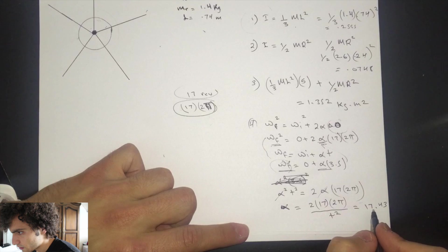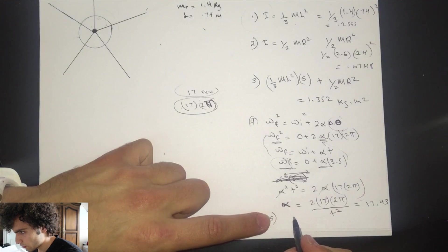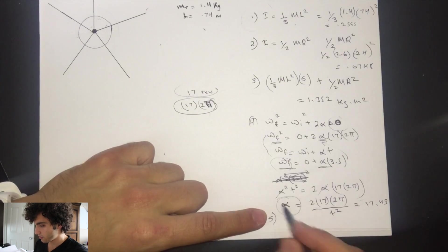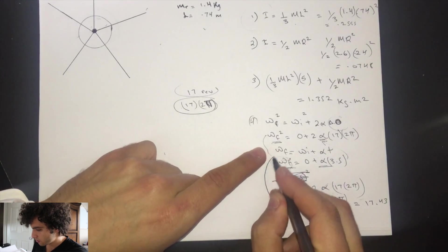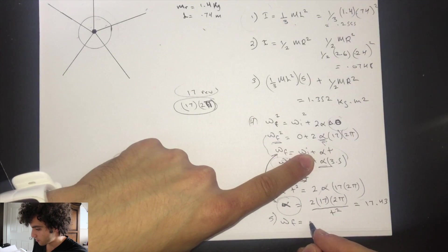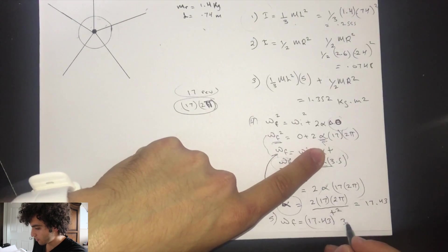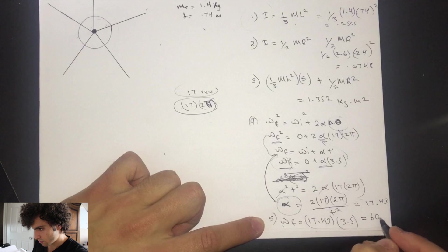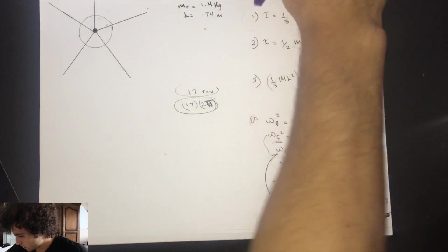For number five, they ask for the final angular velocity. You just substitute the angular acceleration back into the simpler equation: omega final equals alpha times t, which is 17.43 times 3.5. The final angular velocity is approximately 61 radians per second.